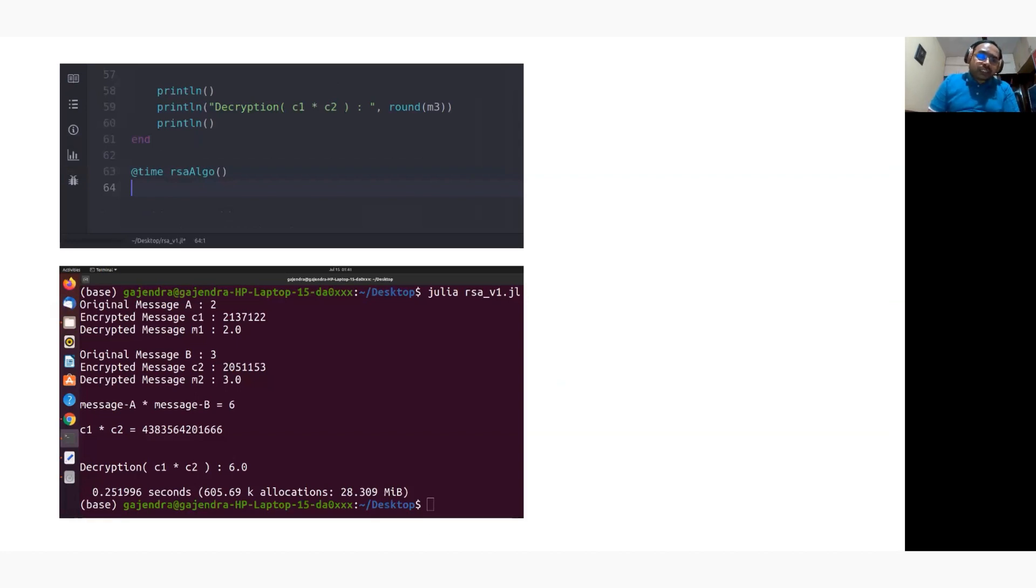Now the results are shown here. We have chosen two numbers, two and three and the corresponding encrypted values are shown. We are performing multiplication operation here. So two into three is six. Similarly, we are performing multiplication operation on the encrypted text, which shows a large number here. When we decrypt c1 into c2, that is equivalent to six, which is equivalent to m1 into m2, that is two into three equals six. It also shows the time it takes to compute the value.